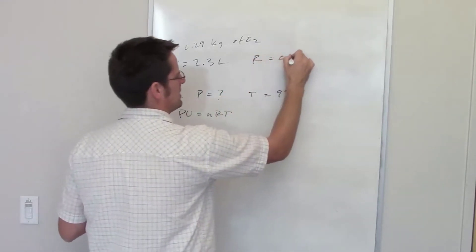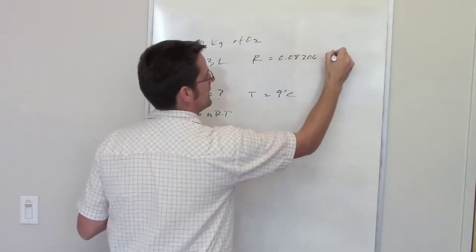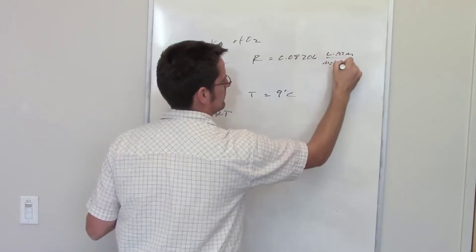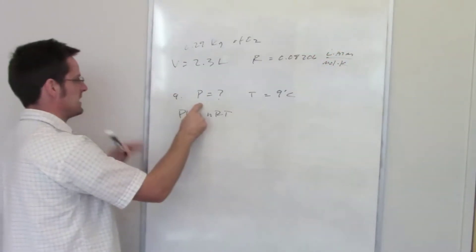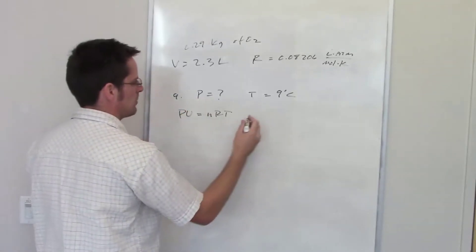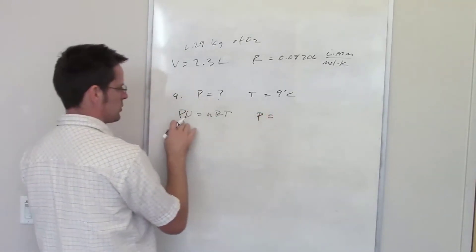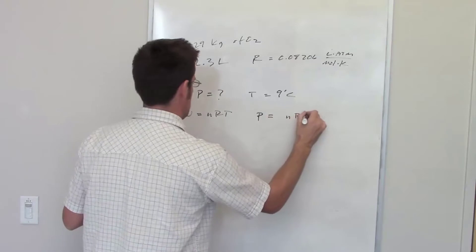It's 0.08206 liter atmospheres per mole Kelvin. The question is asking us for pressure, so I'm going to algebraically rearrange the equation to have pressure on one side and everything else on the other.